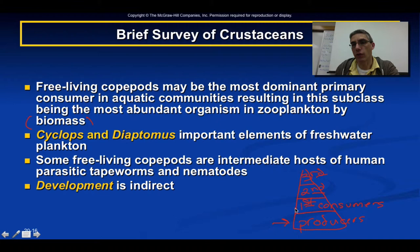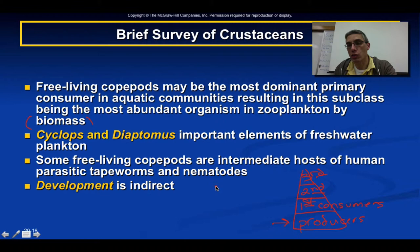Cyclops and Diaptomus are two very important elements of freshwater plankton, critical for feeding second- and third-level consumers. Some free-living copepods are actually intermediate hosts, carrying various human parasitic tapeworms and nematodes. The development of copepods is considered indirect, meaning they have various larval stages that don't look very similar to the final adult form.